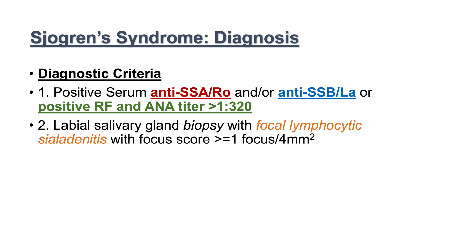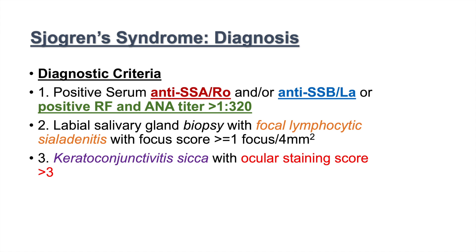The second diagnostic criterion is a labial salivary gland biopsy showing focal lymphocytic sialadenitis — inflammation of the salivary gland due to lymphocytic infiltration — with a focus score greater than or equal to one focus per four millimeters squared. The third criterion is keratoconjunctivitis sicca with an ocular staining score greater than three. If at least two of these three criteria are met, we can make the diagnosis. The key antibodies to remember are anti-Ro and anti-La — if present, think Sjogren's syndrome.